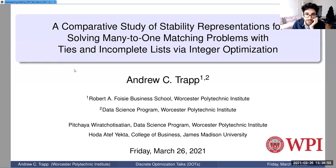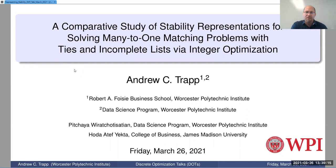Thank you. Hello everyone. I'm Andy Trapp, nice to see you. I'm going to be speaking today about a comparative study of stability representations for solving many-to-one matching problems with ties and incomplete lists via integer optimization. This is with my PhD student Pishaya, who I believe is on the call, as well as my colleague Hoda at James Madison.